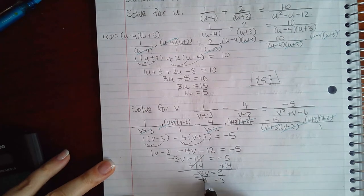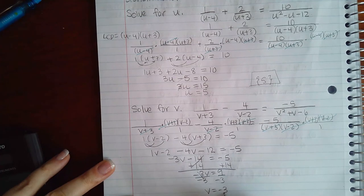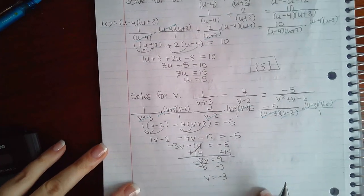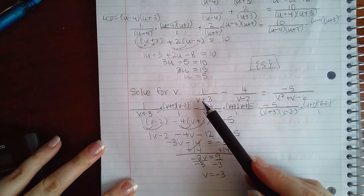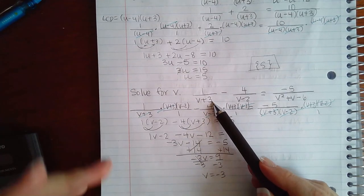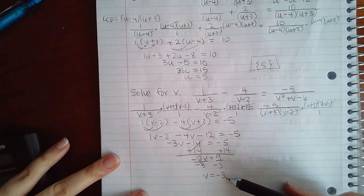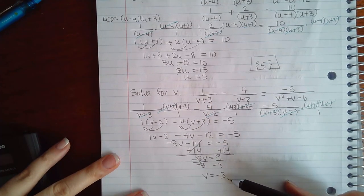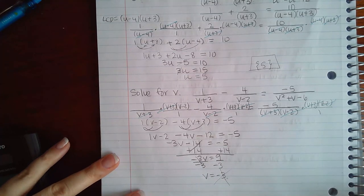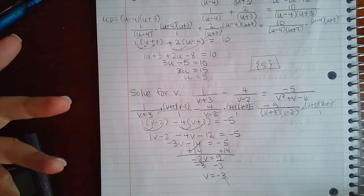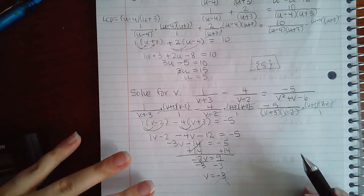However, when I try to plug in negative 3 into the first denominator, I get negative 3 plus 3, which is 0. If this makes any of the denominator 0, this is not a solution. But it's the only solution I found, so if it doesn't work, then the answer I type is going to be no solution.